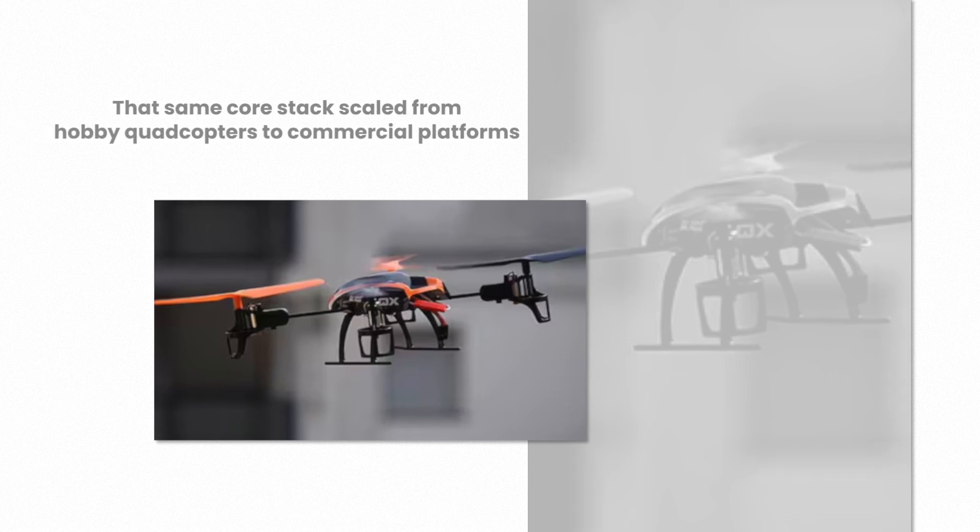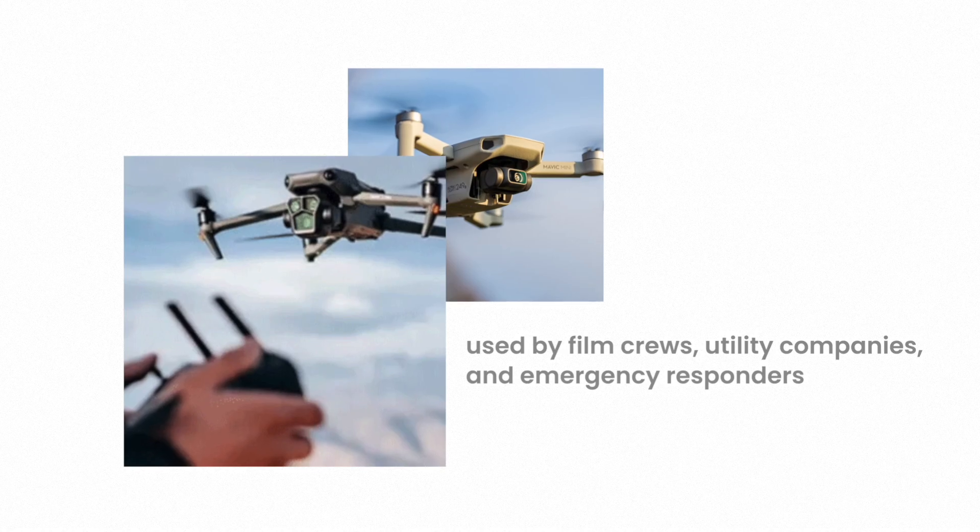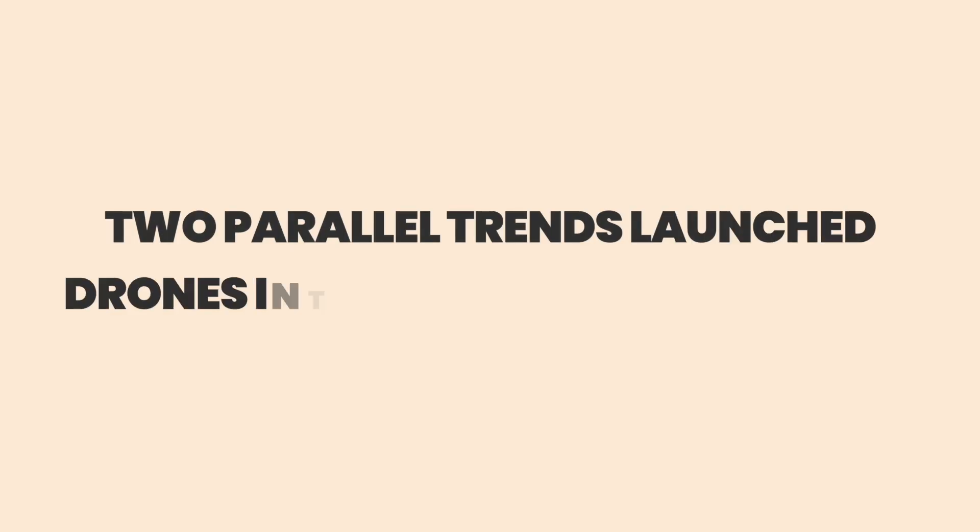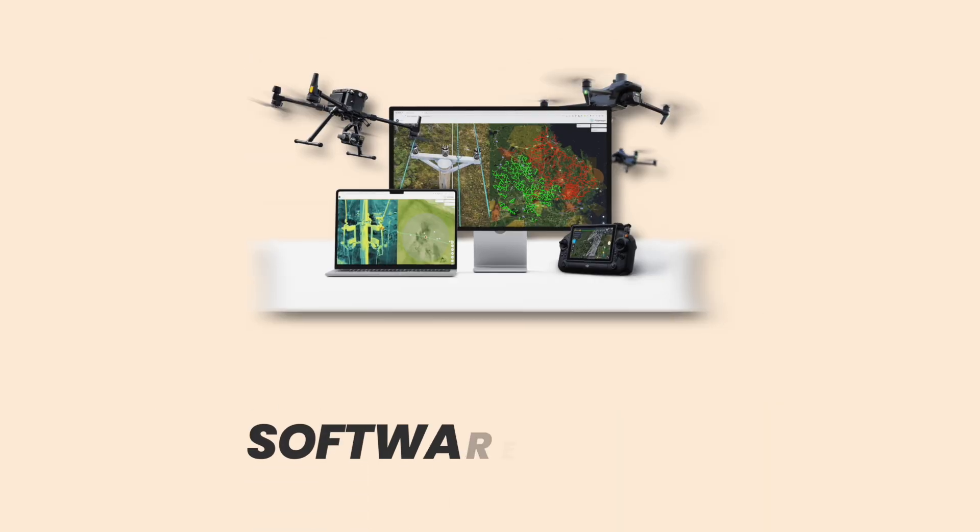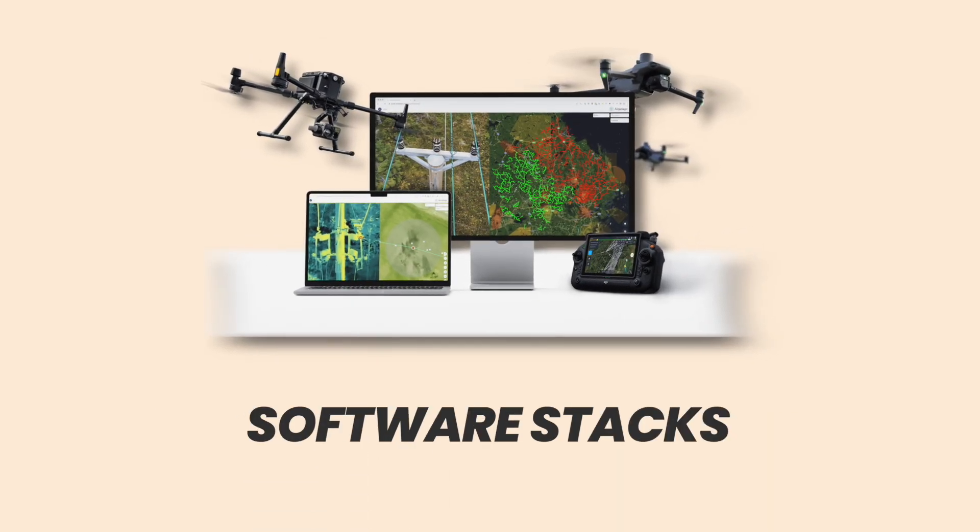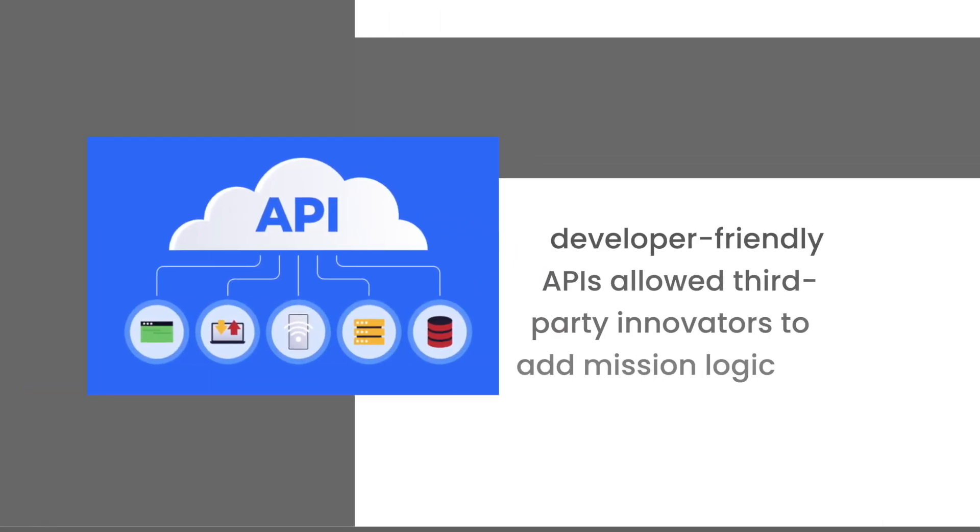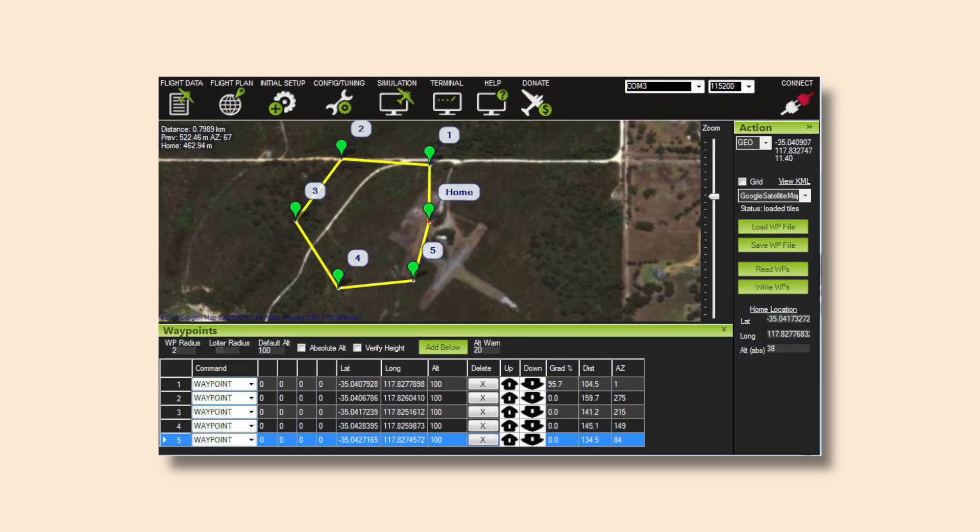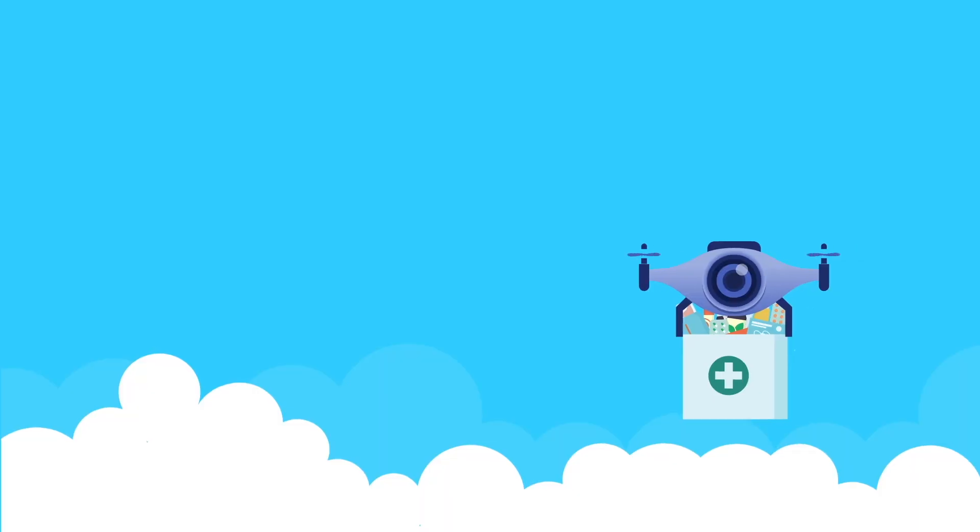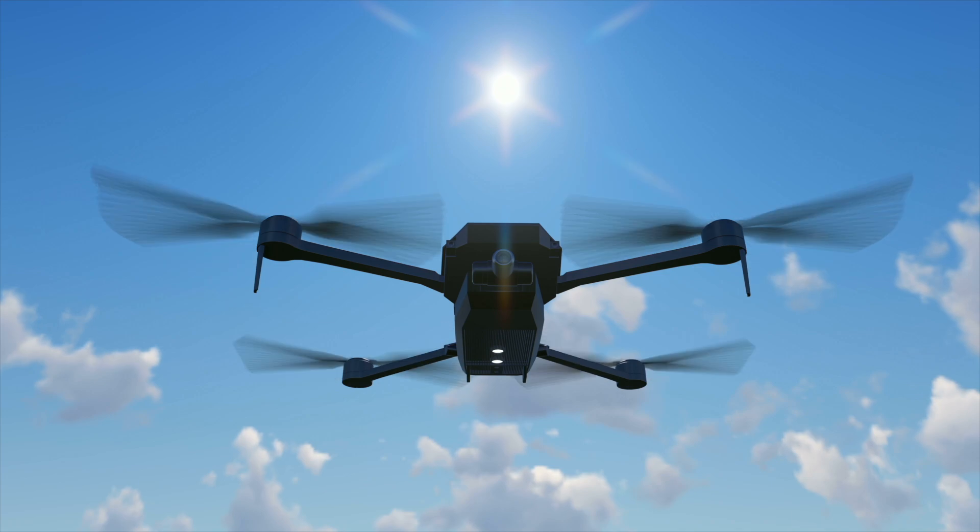That same core stack scaled from hobby quadcopters to commercial platforms used by film crews, utility companies, and emergency responders. Two parallel trends launched drones into mainstream industry. The consumerization of flight and the maturation of software stacks that made autonomy replicable. Open source autopilots, accessible SDKs, and developer-friendly APIs allowed third-party innovators to add mission logic. Everything from route planning to complex payload control. Suddenly, verticals like medical delivery, precision agriculture, and infrastructure inspection moved from pilot projects to production systems. Level 2.